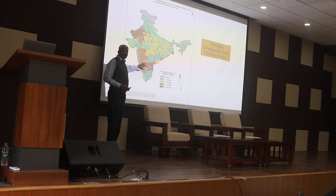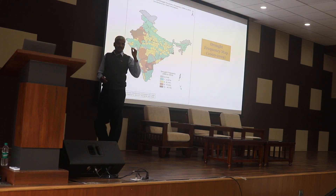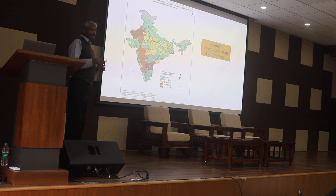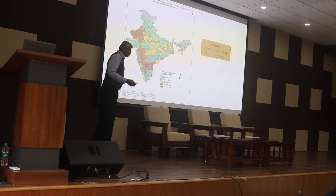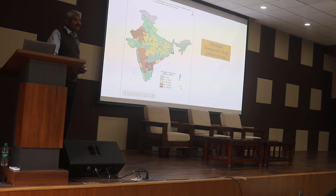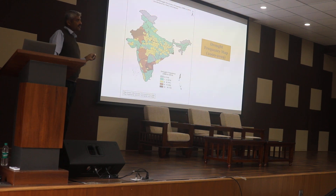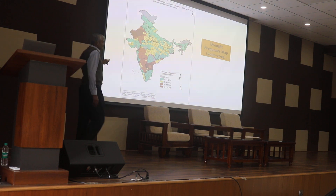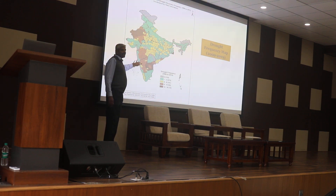Because of climate change, agriculture patterns are being impacted, including delays in the onset of the monsoon. Currently we are in the northeast monsoon season, and the northeast monsoon was delayed by 20–24 days. Similarly, the southwest monsoon was also delayed by 24 days. This is the climate change impact we are seeing — a delay in the monsoon.